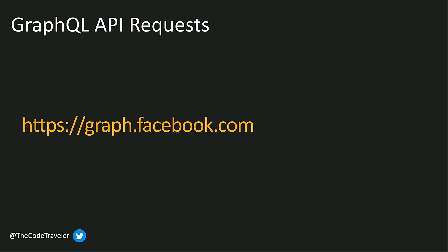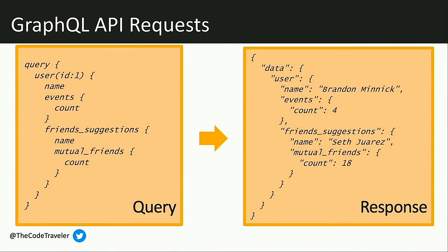Now you might be thinking, well wait a minute — that means it's going to pull back all the data, it's going to be just one giant request because there's only one API endpoint. Well, the smart folks at Facebook figured that out too, because they developed a way to query that API endpoint. This query contains just the data that I want to retrieve from my GraphQL endpoint. So I specified that I want to get data for user ID 1, and for that user I want the user's name, the events count, and for the friend suggestions I would like to know their name and our mutual friends count.